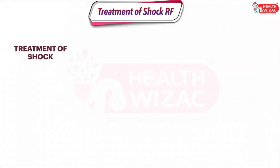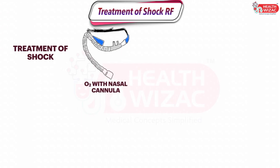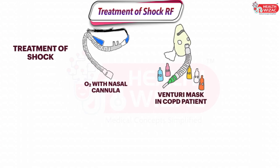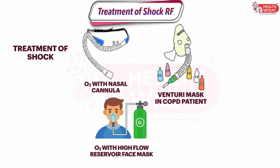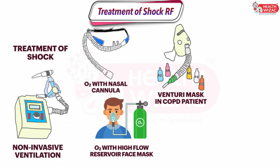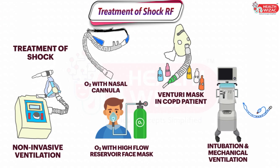Treatment includes treating the underlying cause, i.e. cardiogenic, hypovolemic, or septic shock. Oxygenation with nasal cannula in stable patients with oxygen requirement of less than 6 liters per minute; Venturi mask in cases of controlled oxygen requirements especially in COPD patients; oxygen therapy with high-flow reservoir face mask; non-invasive positive pressure ventilations like BiPAP and CPAP; and if the patient fails to respond, intubation and mechanical ventilation should be considered.